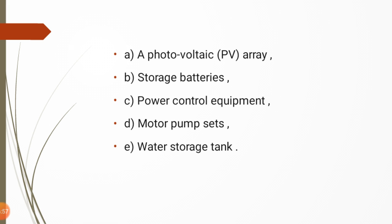The photovoltaic water pumping system essentially consists of: a photovoltaic array (the main part), a storage battery (which stores energy for rainy or cloudy days when sunlight is unavailable), power control equipment (to decide how much power is required), a motor pump set, and a water storage tank for storing the collected water.